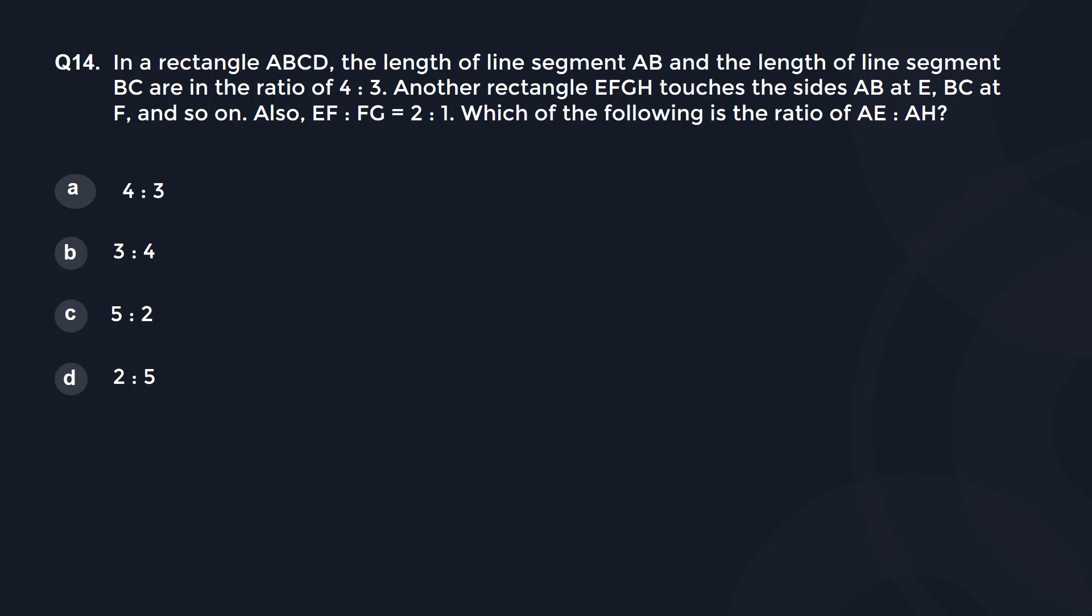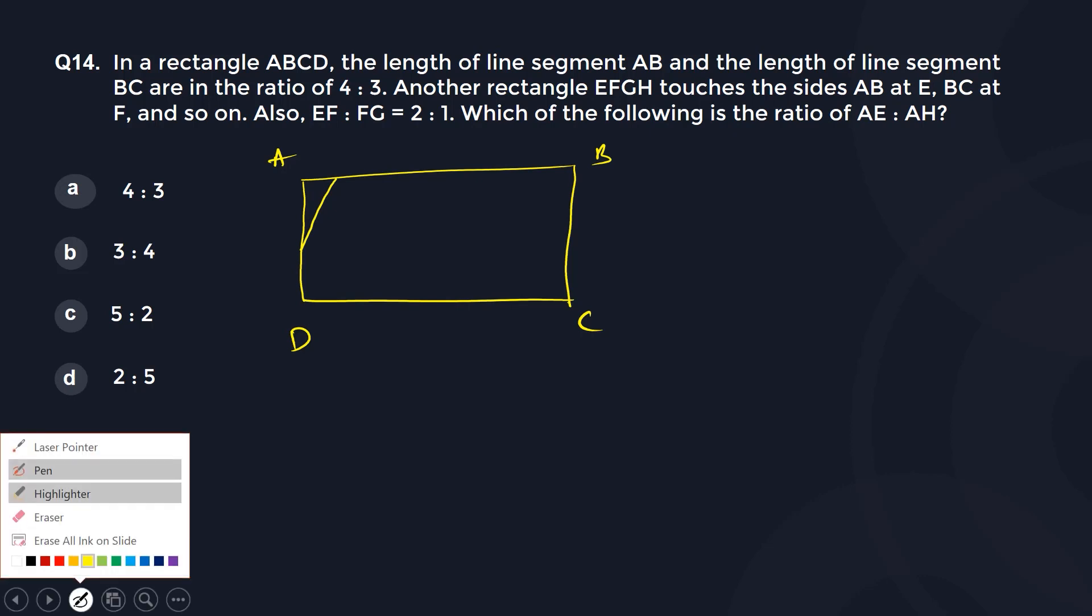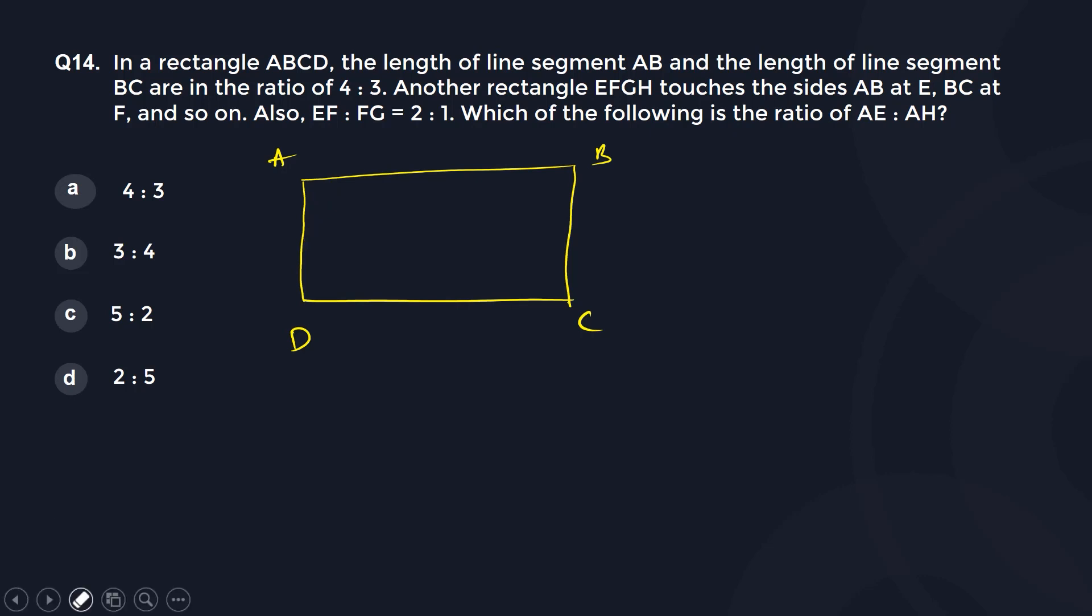We are basically saying that there is a rectangle. So I have to draw a rectangle A, B, C, D. So we have A, B, C, D and we have another rectangle. I will just take a little bit of time. This has to be drawn correctly. This is one and this has to be 90 degrees and this has to be 90 degrees too. Assume it is a rectangle. I am not a perfect artist. So this has to be E, F, G and H.